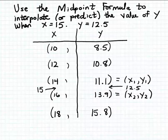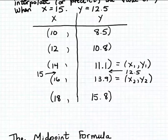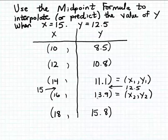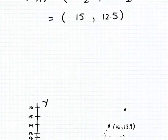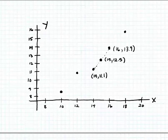To give a geometric picture of what we just did: we took this table of data pairs and made a scatter plot of it, and then found the midpoint halfway between two points on that scatter plot. Here's the scatter plot of that table. We can see the points (14, 11.1) and (16, 13.9), and we found the midpoint (15, 12.5) halfway between them — giving us our estimate for y = 12.5 when x = 15.